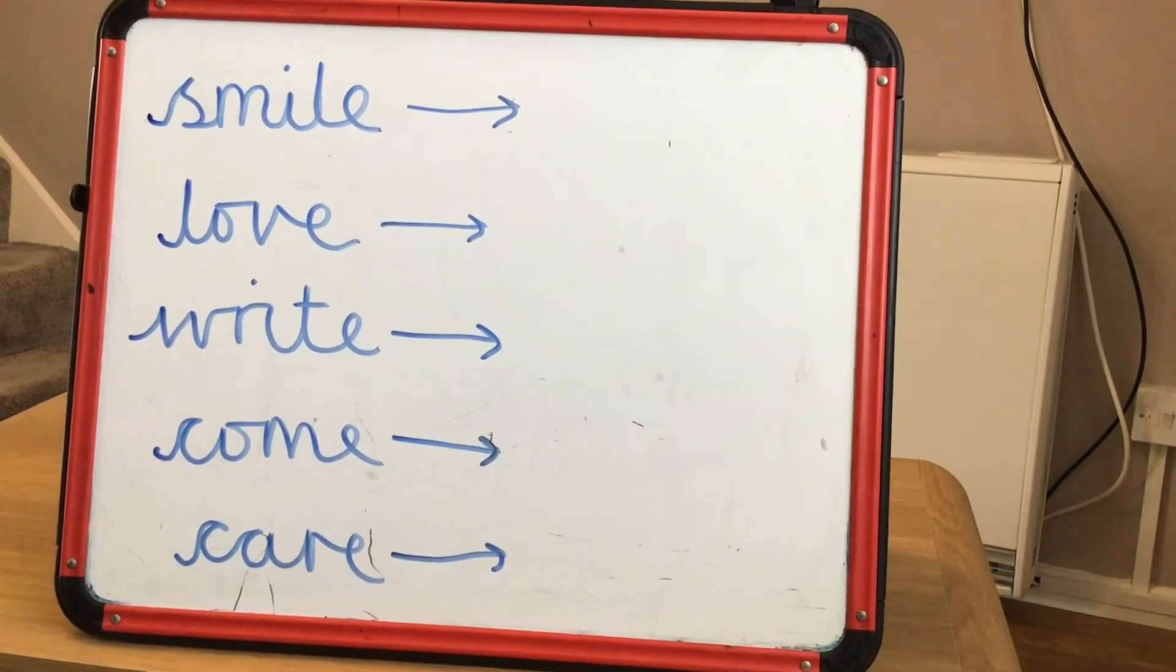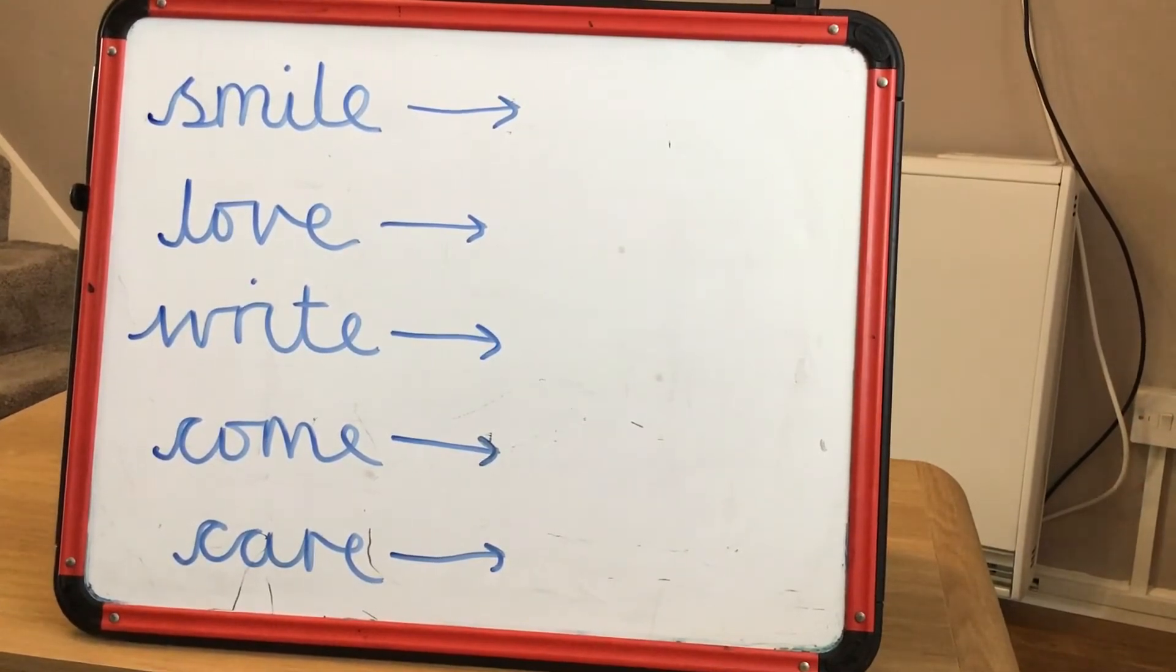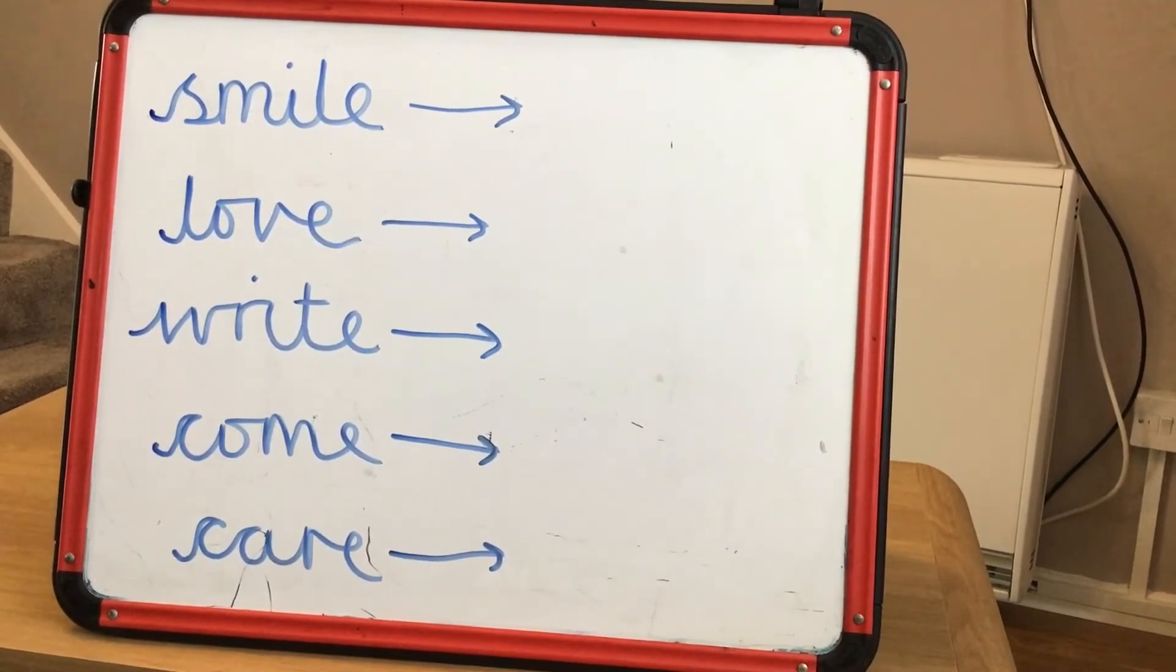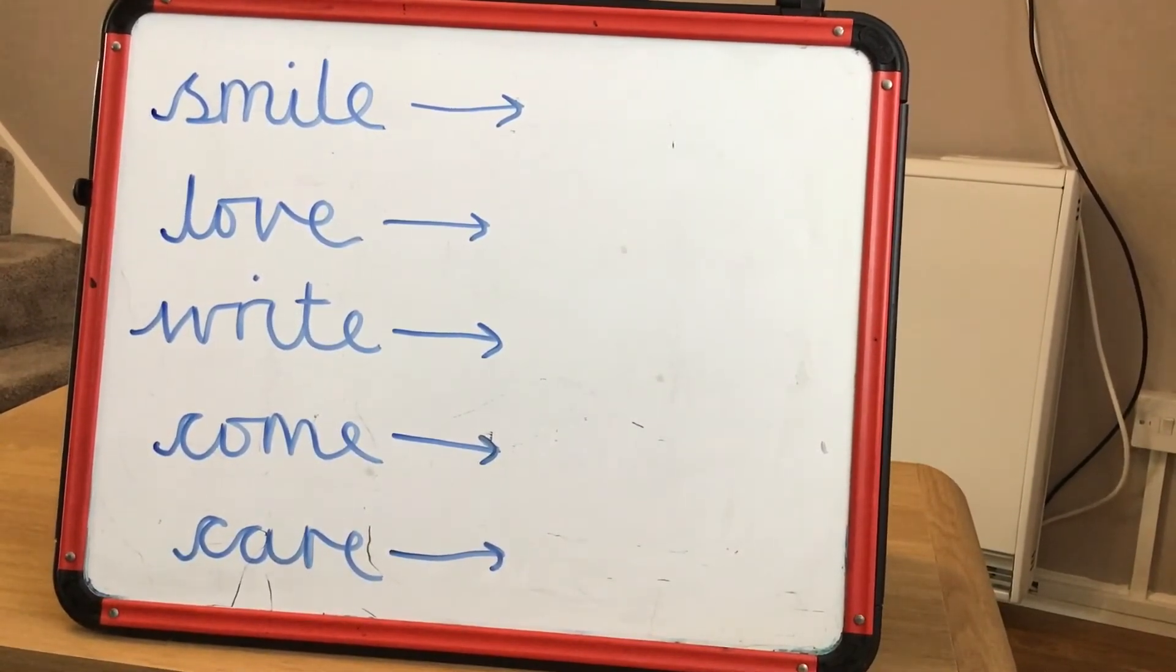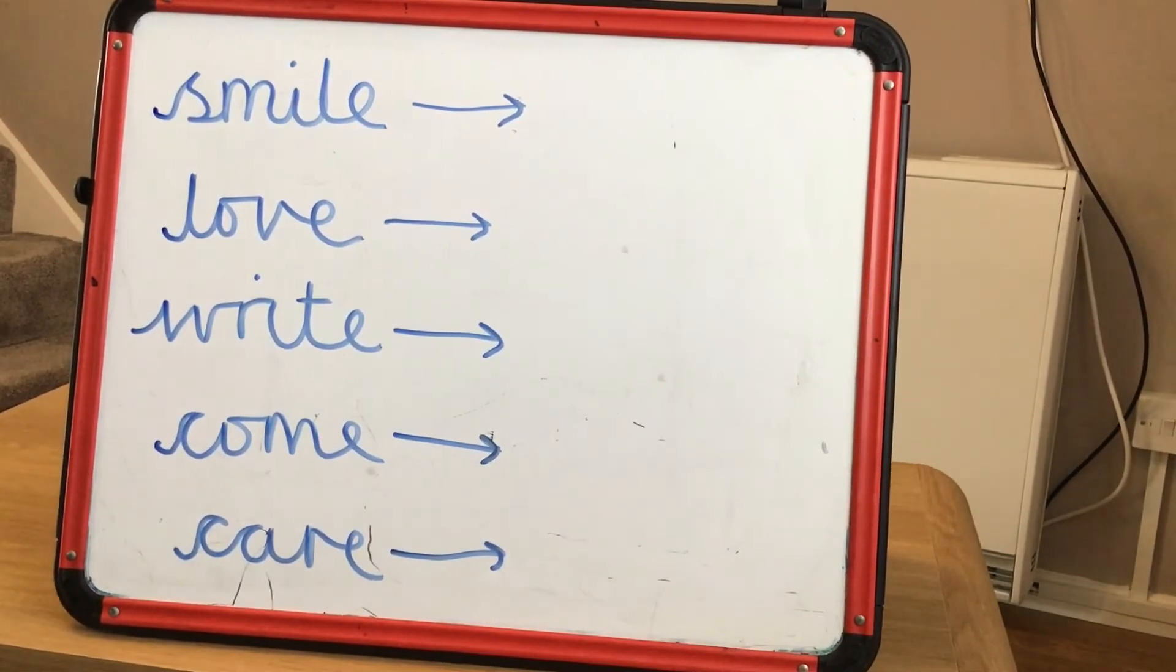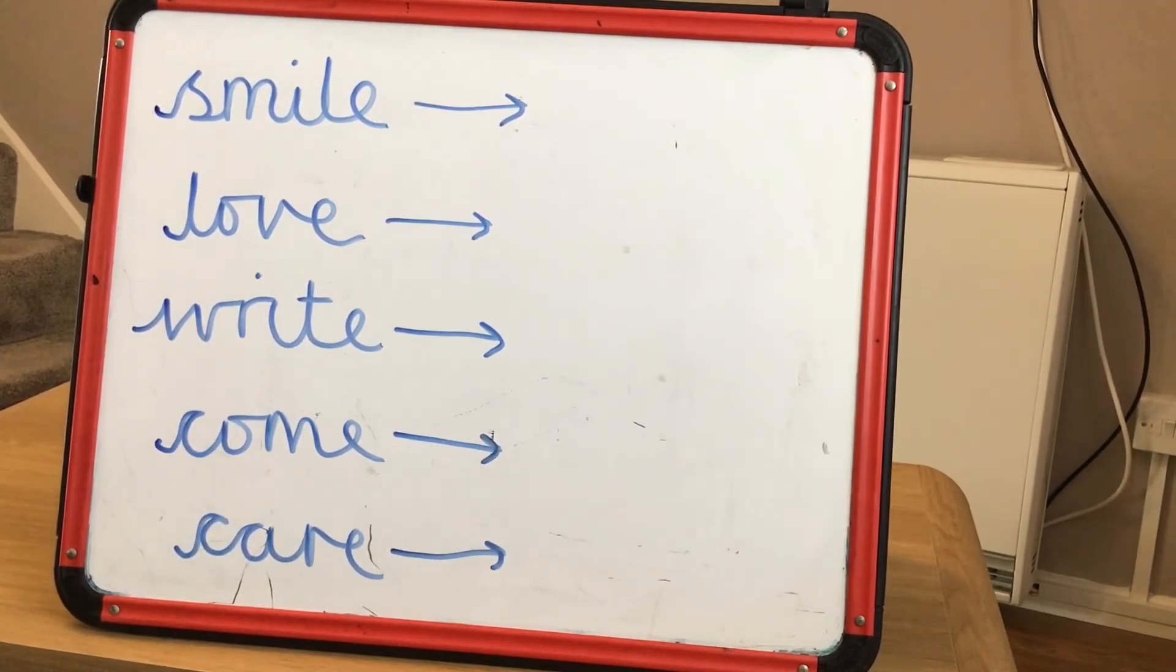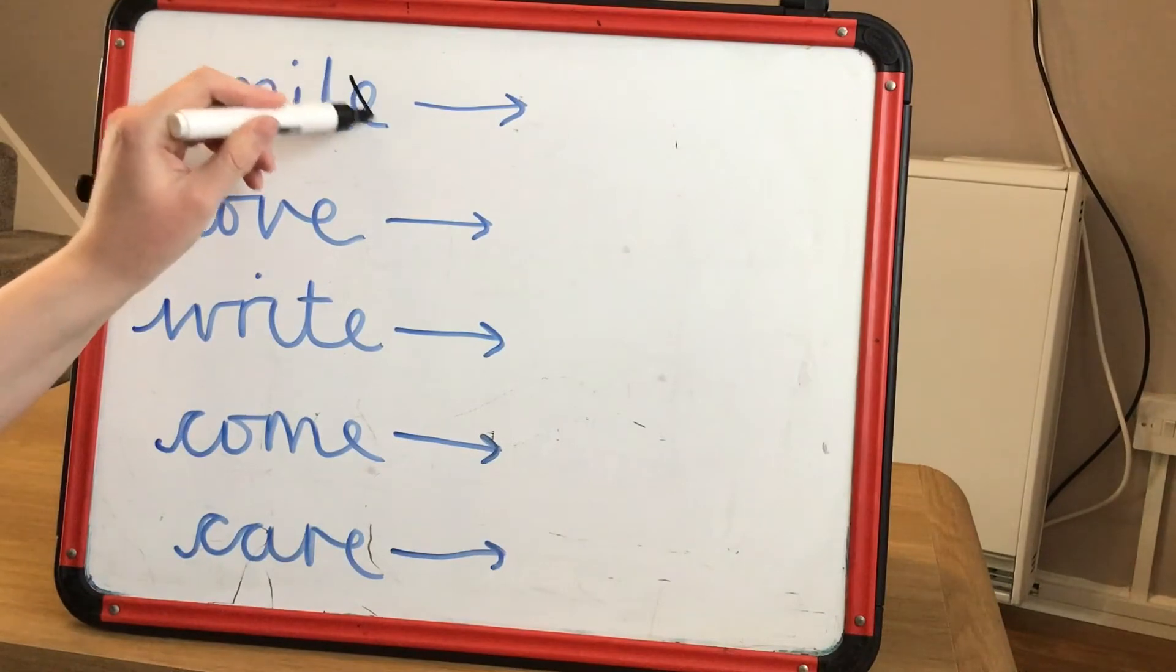Here we have five more verbs ending in e that we can add the suffix '-ing' to. You could pause the video here and have a go at adding '-ing' to these verbs. So we've got smile, love, write, come, and care. So to add '-ing' to these verbs, we need to take away the e.